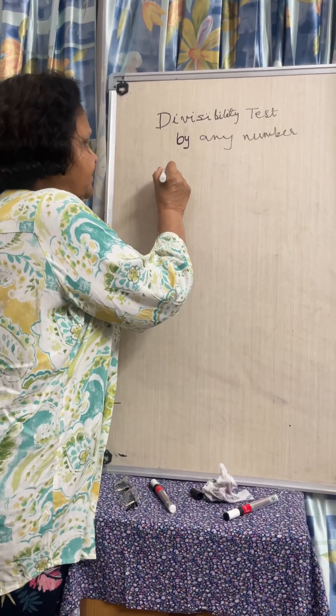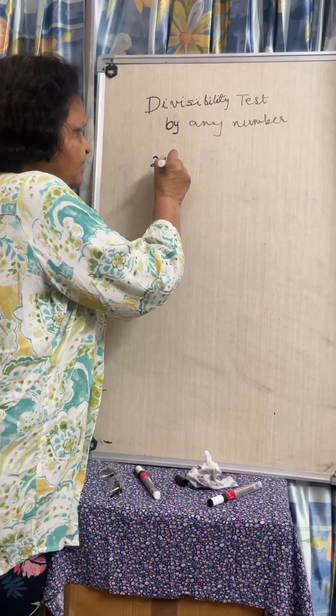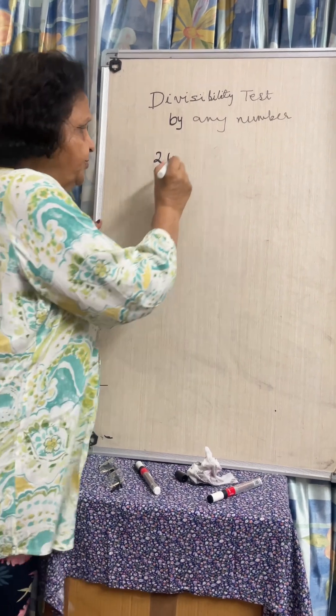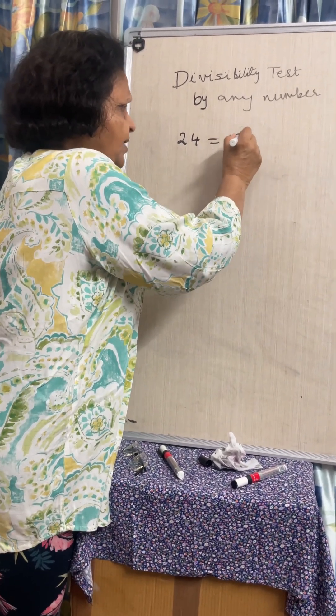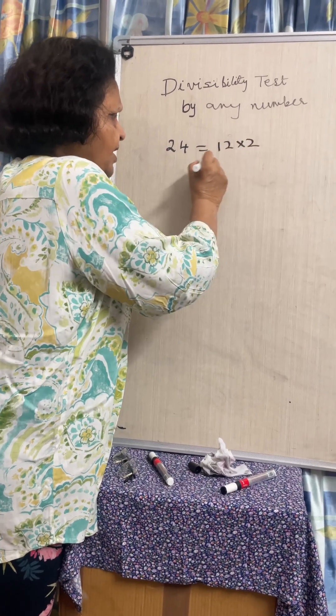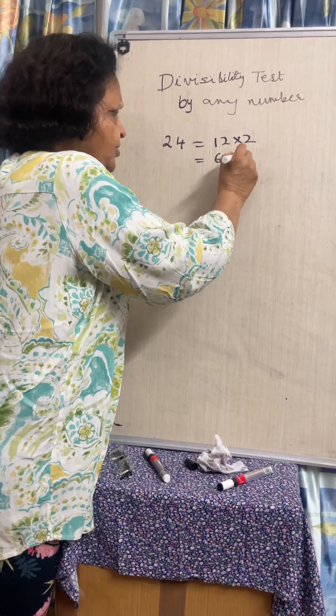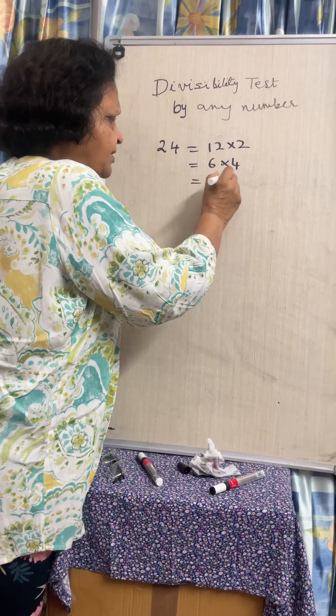Supposing you want to know whether a number is divisible by 24. What you do is make its factors. So you have 12 into 2, you also have 6 into 4, you also have 3 into 8.